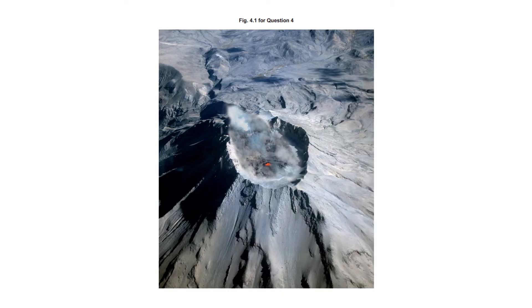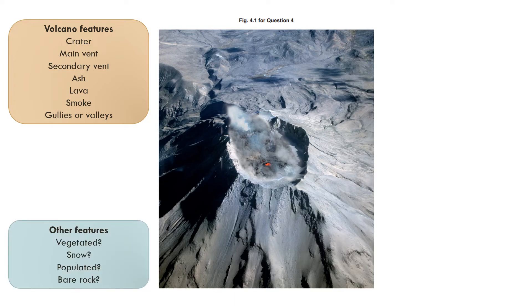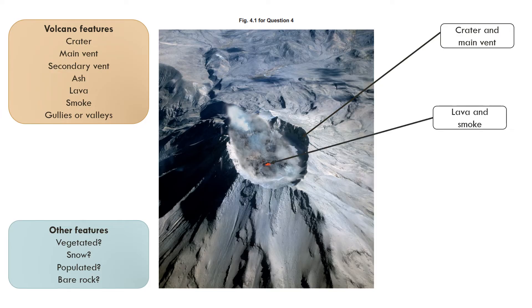When it comes to describing the features of the volcano, you need to first identify any volcanic features — how do I know it's a volcano? You might also want to consider other features, for example: is it vegetated, is there snow, is it a populated area, is there bare rock, or has it been used for farming? So from this image we can see there's a crater and main vent, and there's some lava and smoke rising.